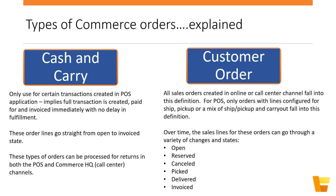Within the product there are two order types: cash and carry, and customer order. Cash and carry means the transaction is created, invoiced, and fully fulfilled in a single step — think of a typical store transaction where a customer brings items to the counter, pays, and leaves. These transactions don't have much of a lifecycle beyond the possibility of being returned. Customer orders, by contrast, can be created in any supported channel and have a lifecycle — they aren't finalized at creation time.